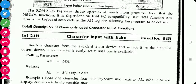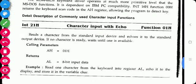The first function used for character input from the input device is Function 01h of INT 21h. This is called character input with echo. This function takes input from the standard input device and displays it on the standard output device — meaning it takes input from the keyboard and displays it on the monitor.